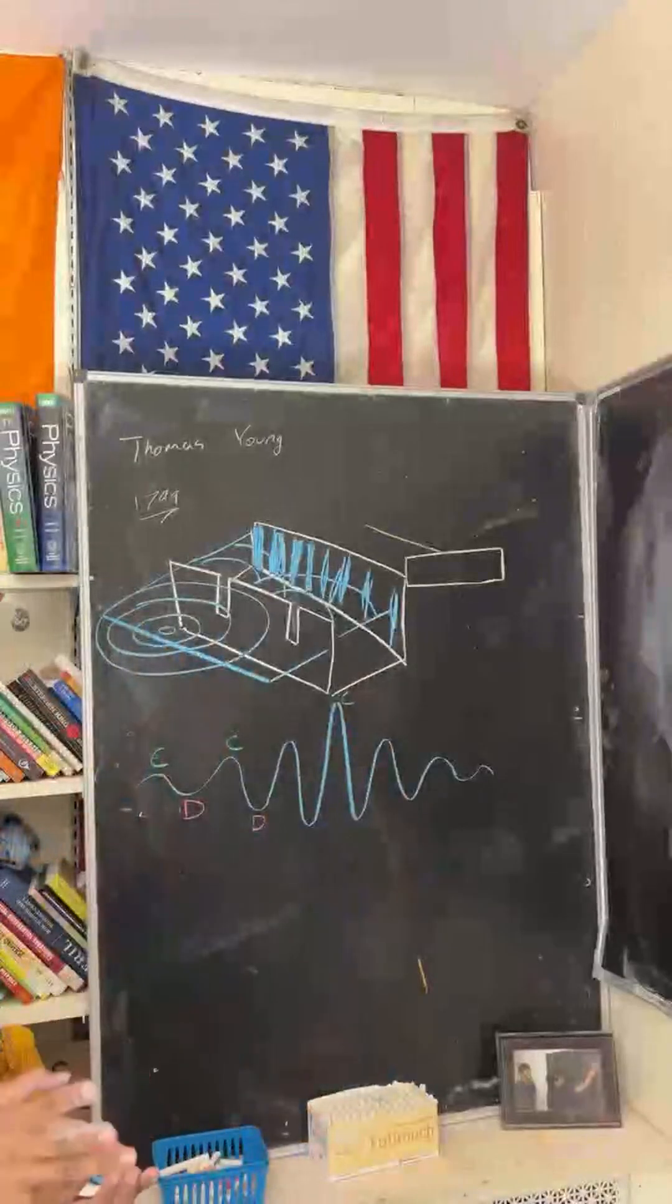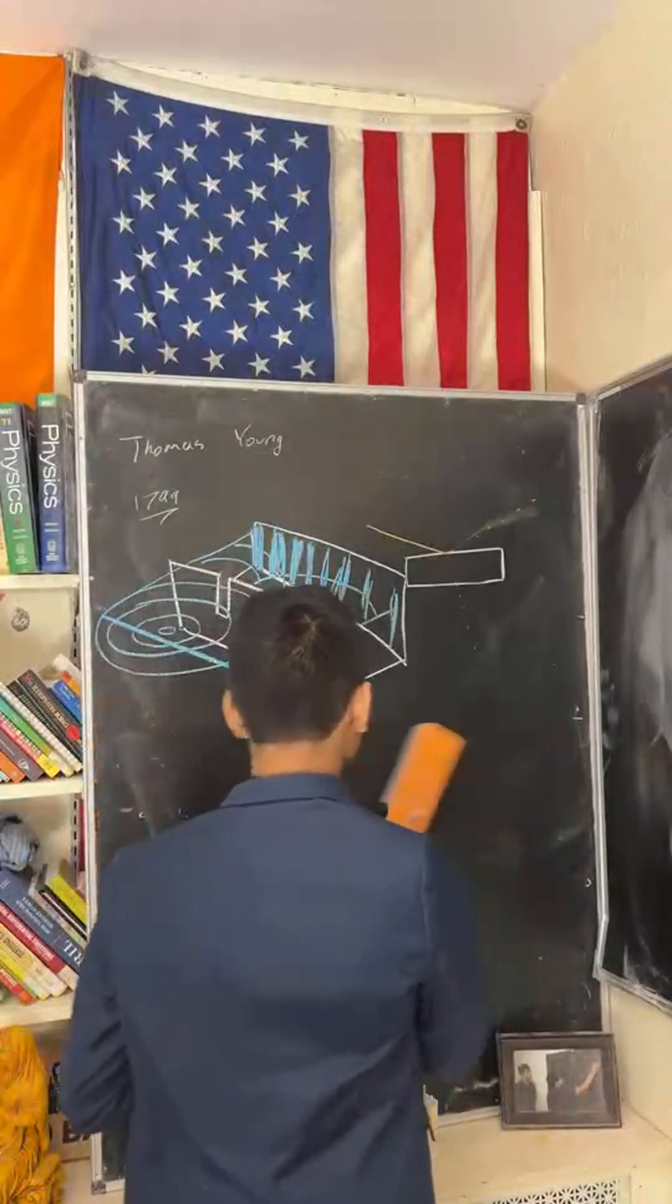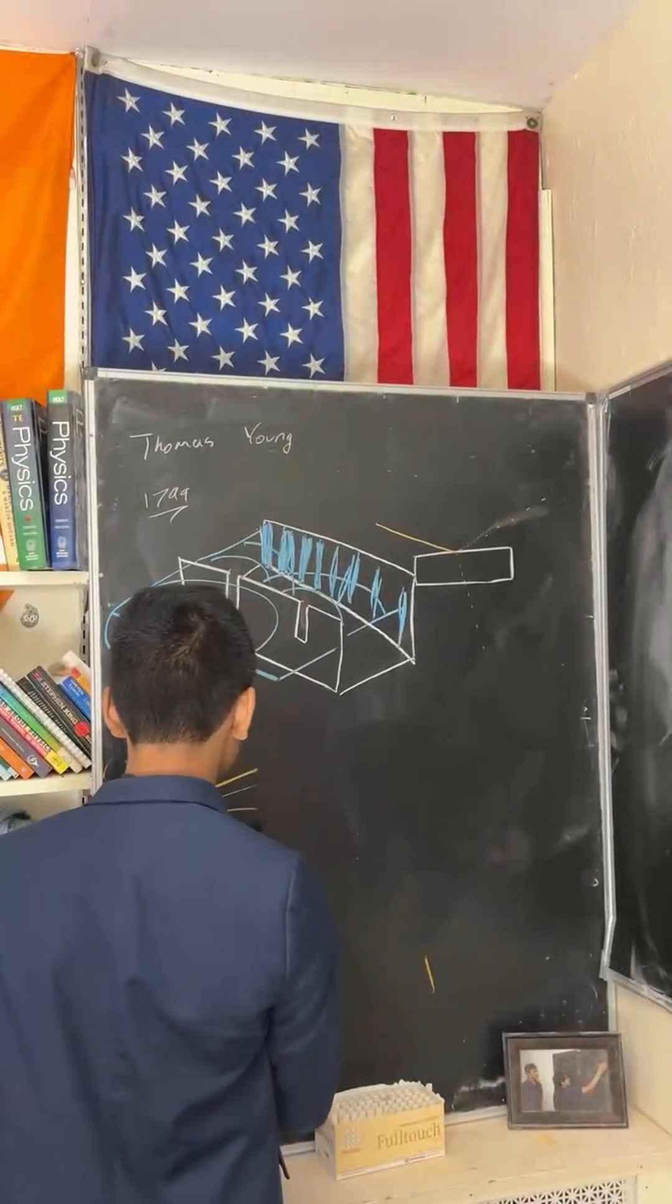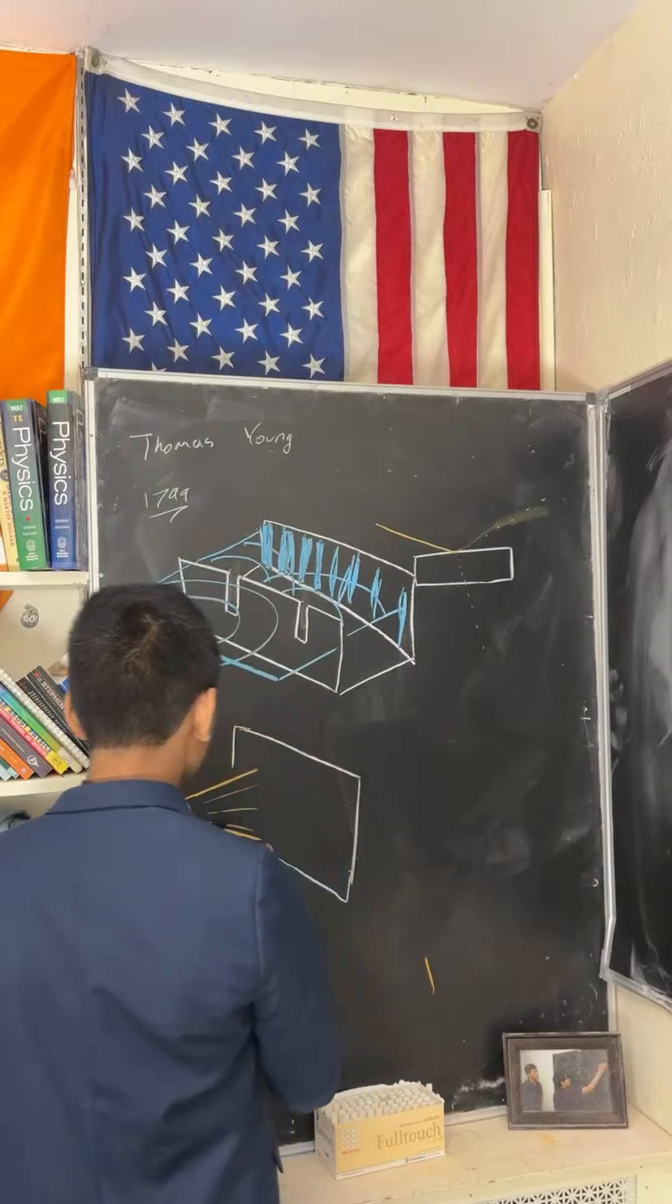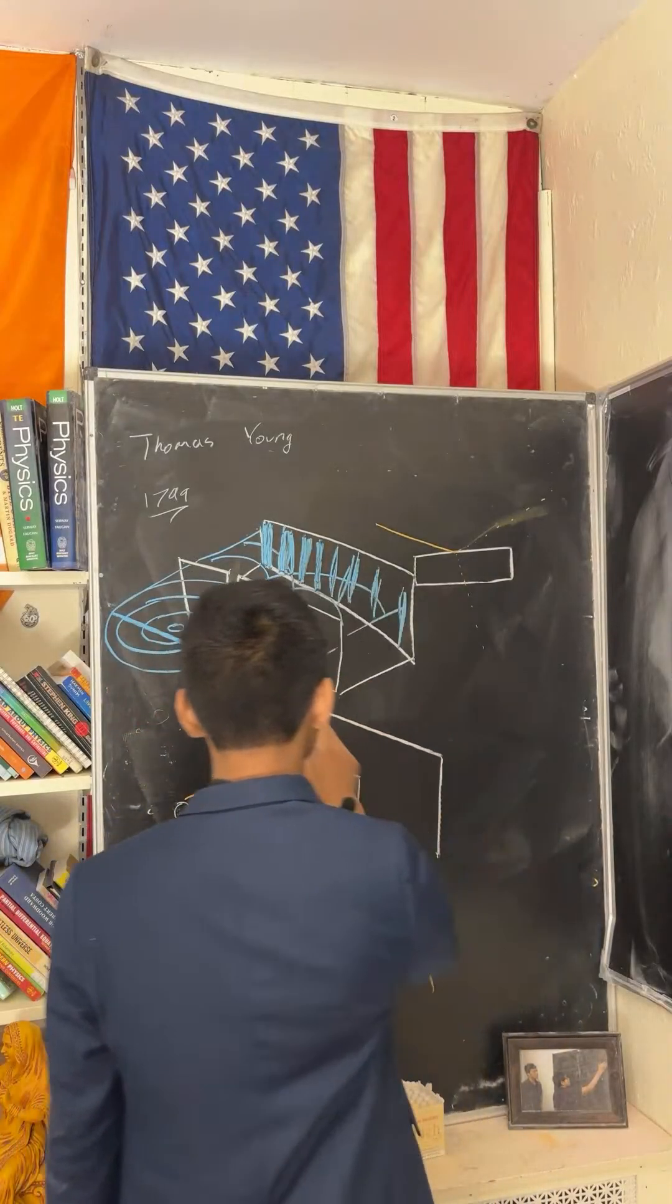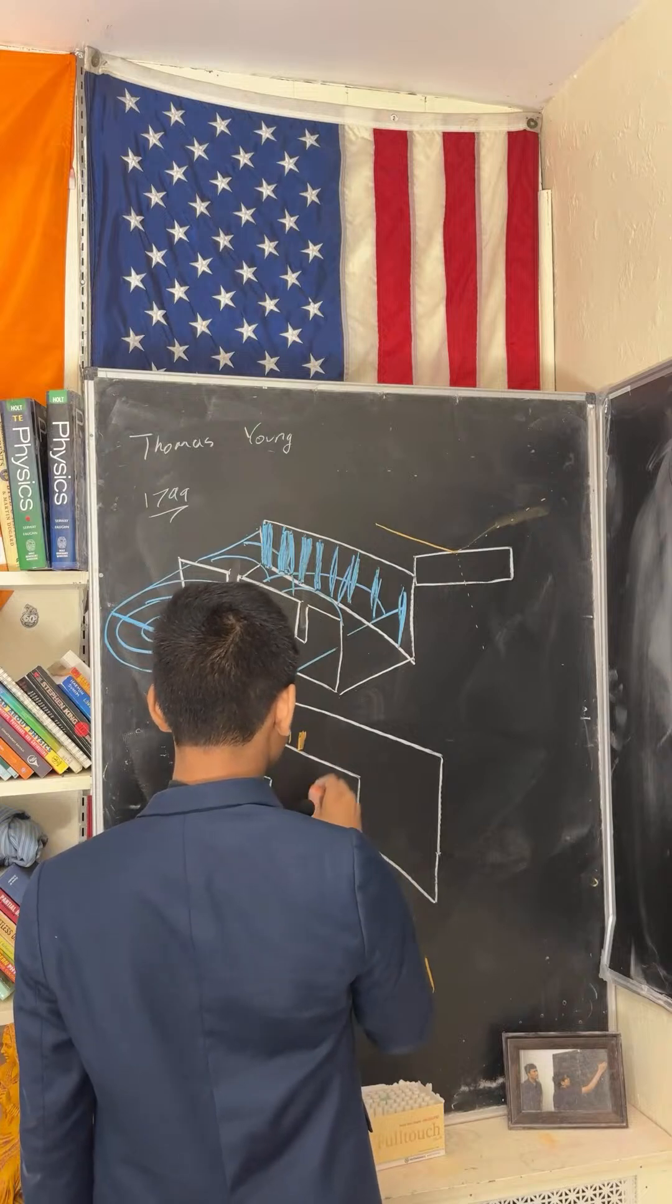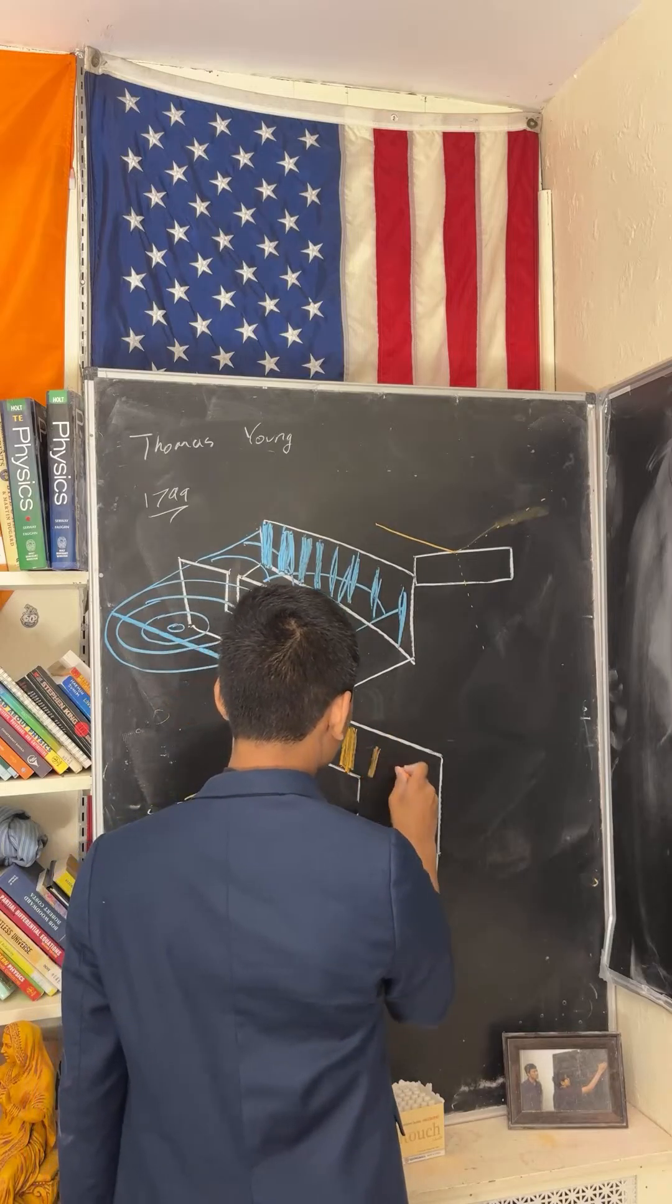Then, he performed the same exact experiment, but instead of making pulses with water, he used a light source. He took his light source and projected it onto a wall that also had two slits. And, on the back, he recorded the interference patterns that were formed. Just the same way, he got small light fringes, dark fringes, bigger light fringes, dark fringes, even bigger light fringes, dark fringes, and a repeated pattern.